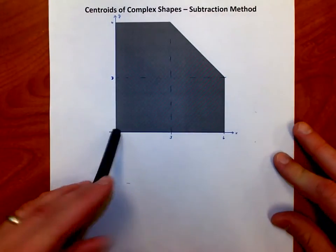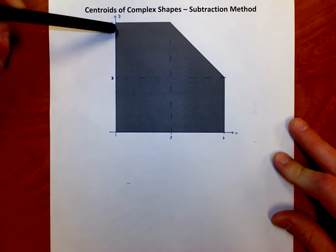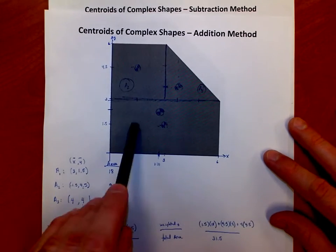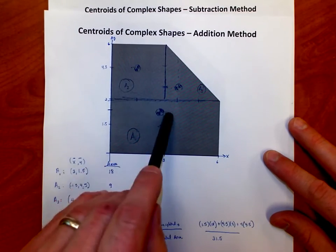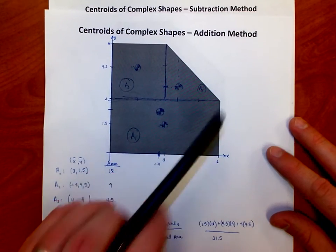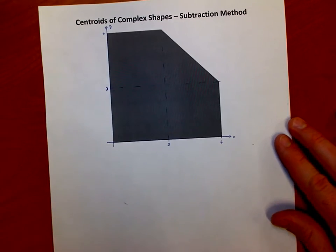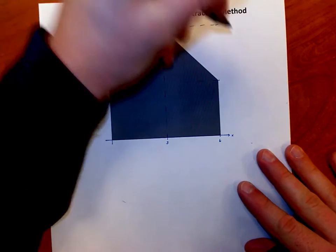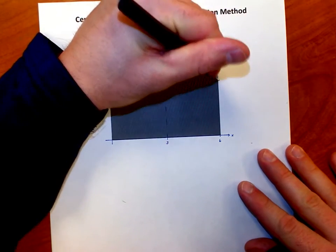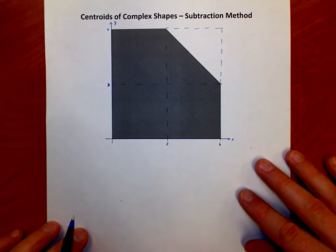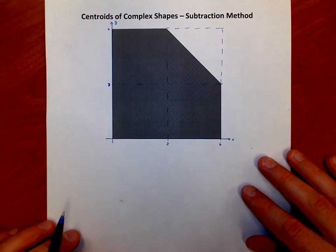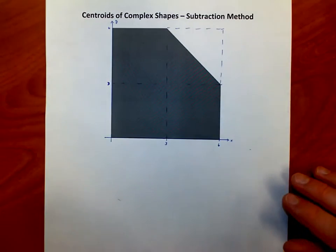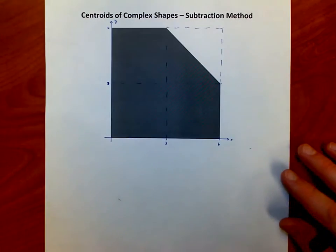So again, six units wide, six units tall, except this time, instead of looking at it like we did last time as a rectangle and a square and a triangle and we added things up, we're going to instead look at it this way. I'm going to view this as a square with the corner lopped off. And so what I'm going to do is treat it as if that square actually existed, and then I'm going to subtract away the triangular piece.